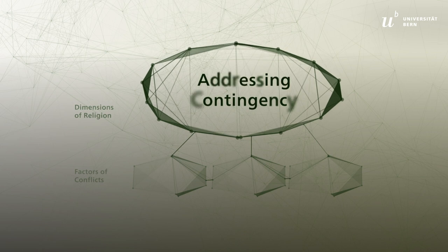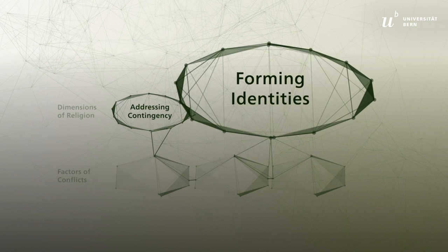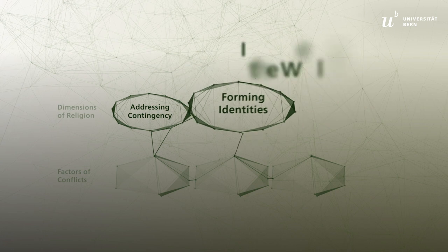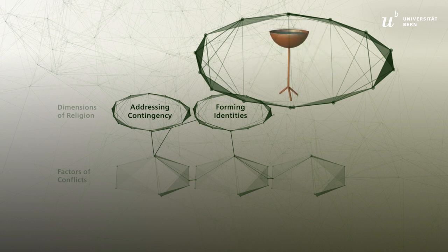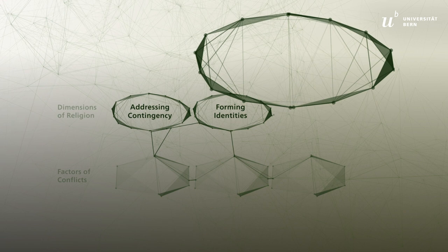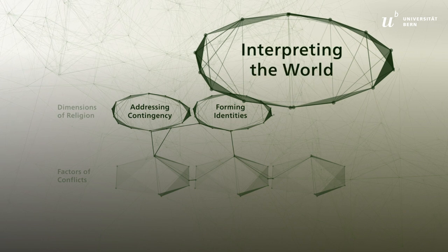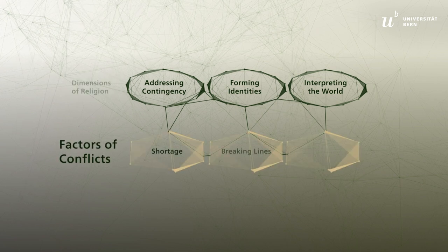Firstly, religion addresses contingency and gives people guidance on how to feel and behave by providing rituals and guidelines for life. Secondly, religion contributes to forming identities, both individual and group identities. And thirdly, religion influences how people interpret the world by providing symbols, narratives, interpretations, and teachings using rhetorical means and images.